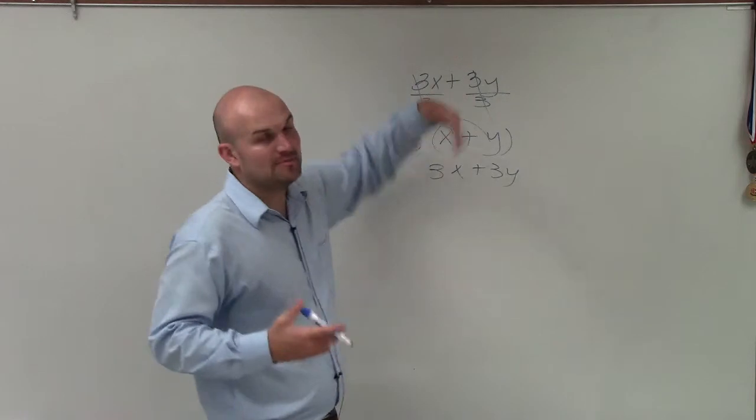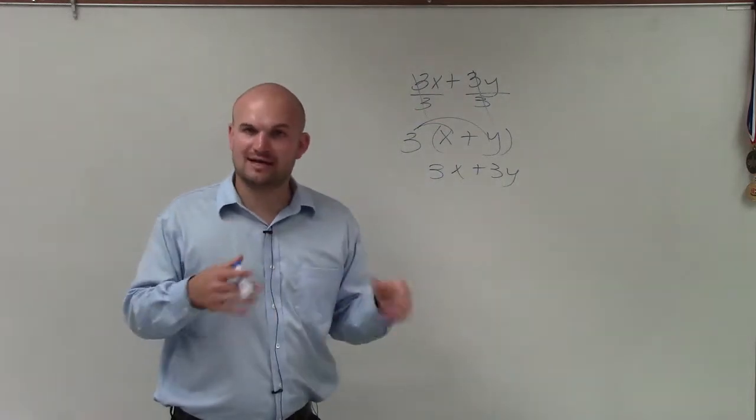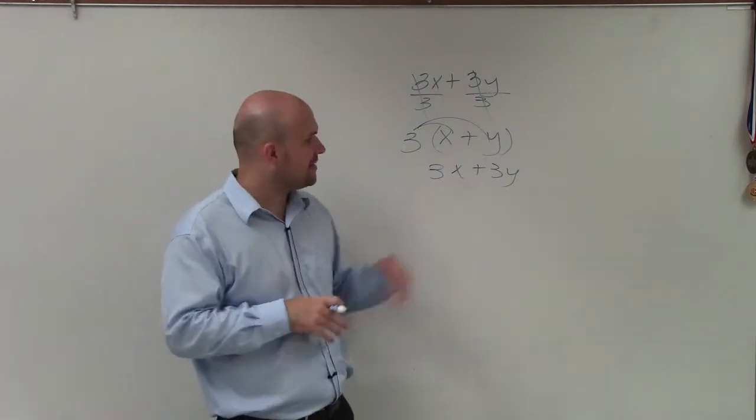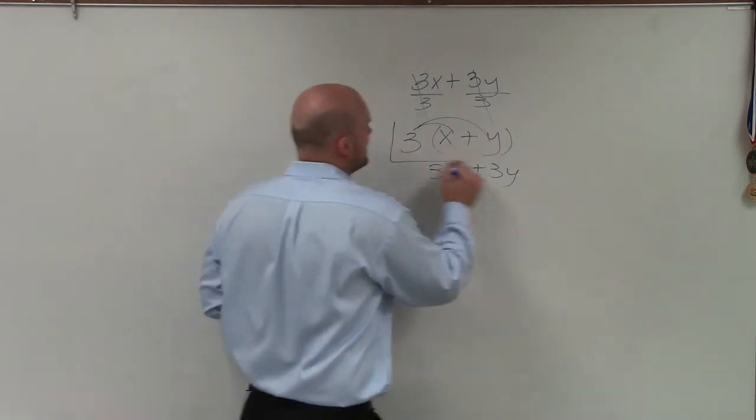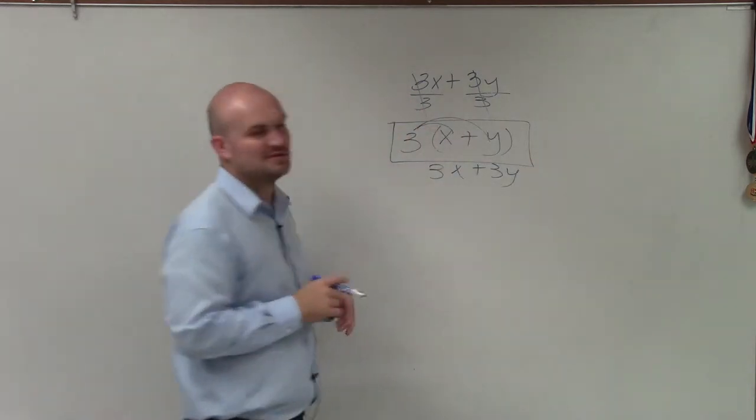And we do that by finding common terms and factoring them out, or a lot of times dividing those common terms out. So there you go, ladies and gentlemen. Your factored form would be 3 times x plus y. Thanks.